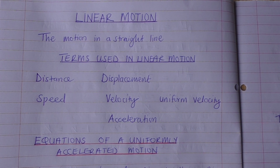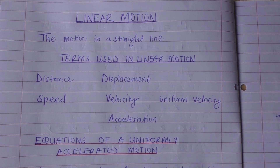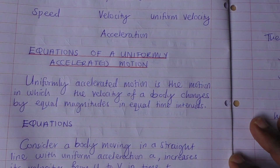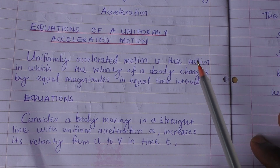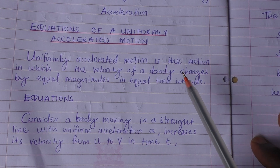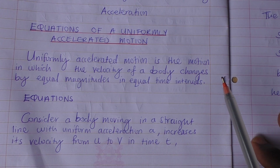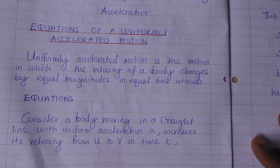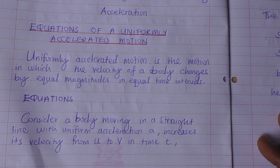We have the equations of a uniformly accelerated motion. A uniformly accelerated motion is that motion in which the velocity of a body changes by equal magnitude in equal time intervals. So, let us generate the equations of a uniformly accelerated motion.